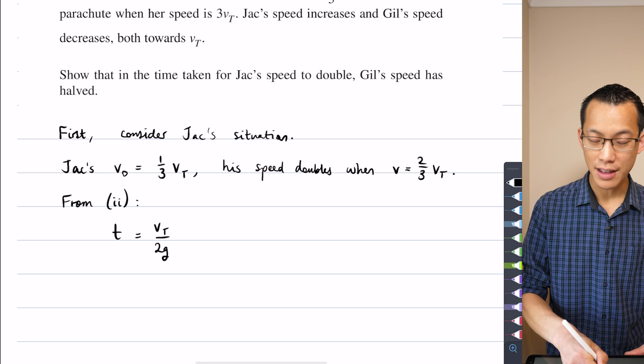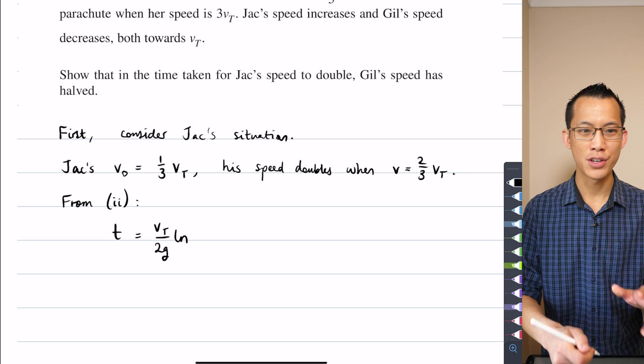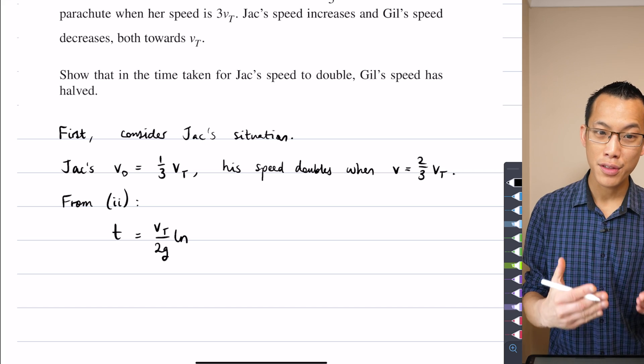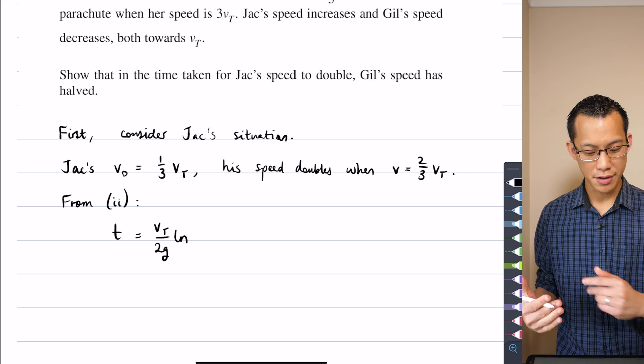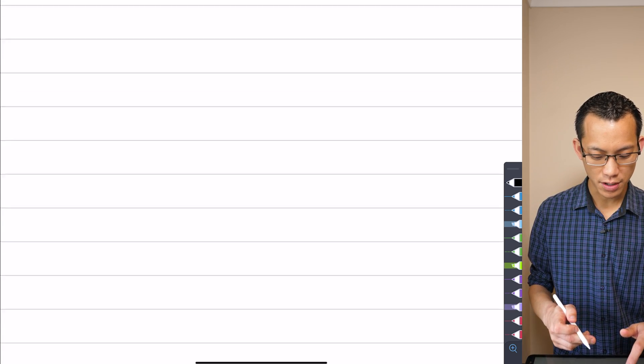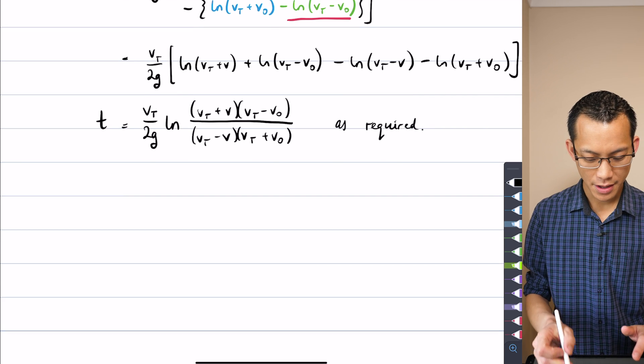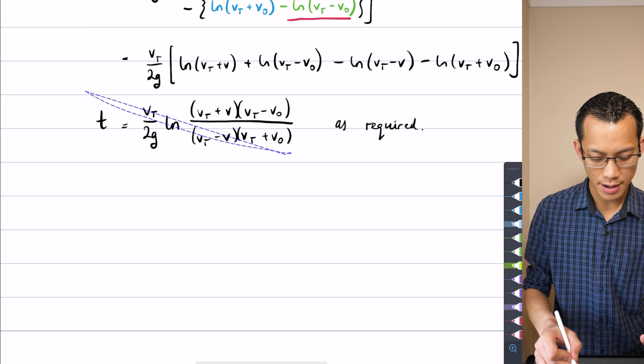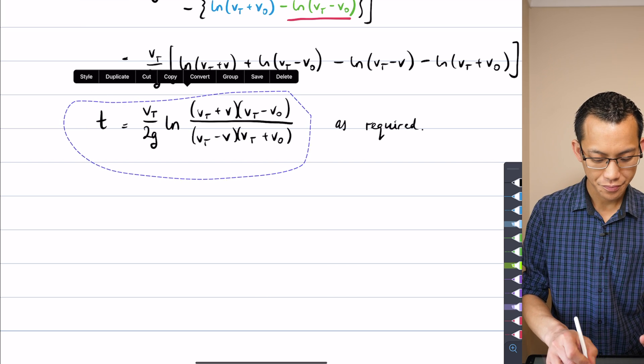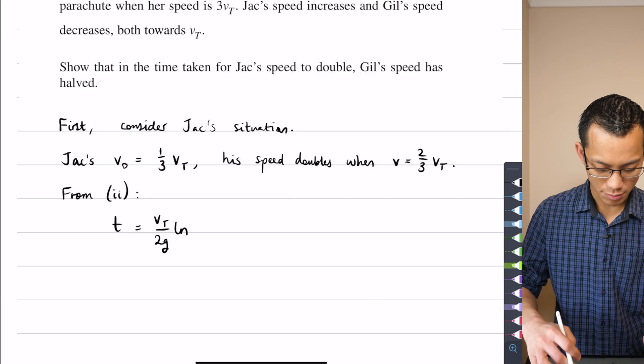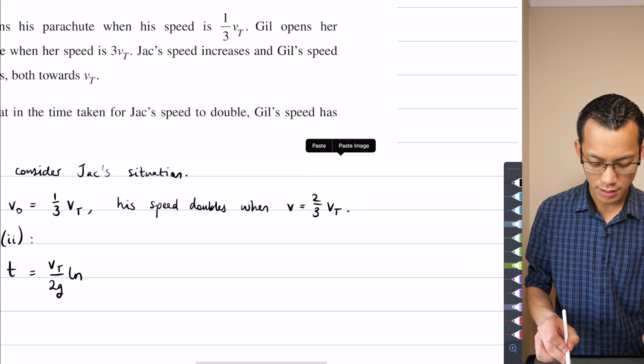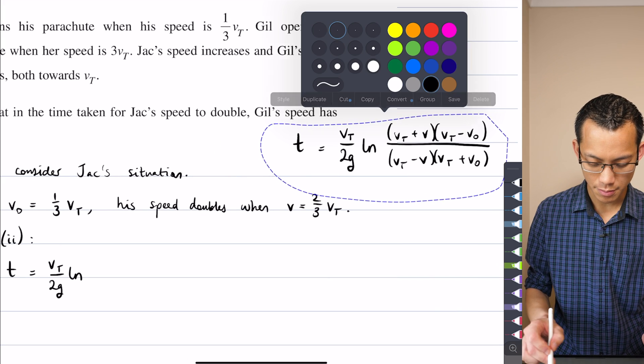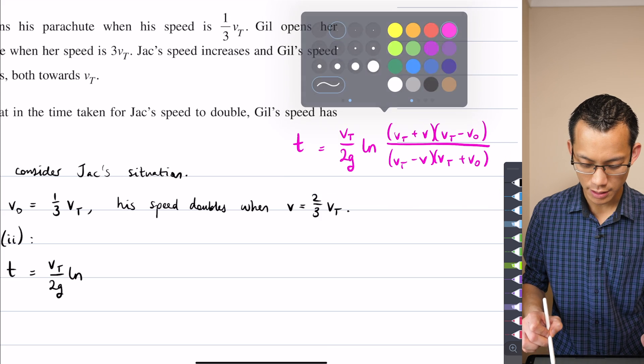You get VT over 2g at the front, here comes the log term, and then I'm gonna put in two-thirds VT and one-third VT in all the appropriate spots. Let me just copy and paste this so I have it nearby.